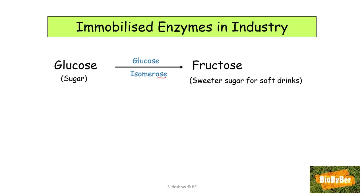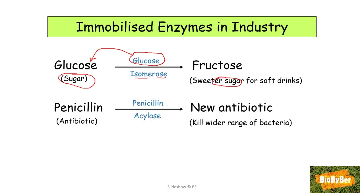Enzymes are often also named for the substrate that they act upon. For those doing chemistry, an isomer is where two molecules have a similar structure — so here we are making two sugars of similar structure, which might help you remember it. Penicillin acylase catalyzes the reaction of penicillin to make a new antibiotic. This is useful because the new antibiotics help to kill a wider range of bacteria, especially with the development of superbugs that are immune to currently available antibiotics.